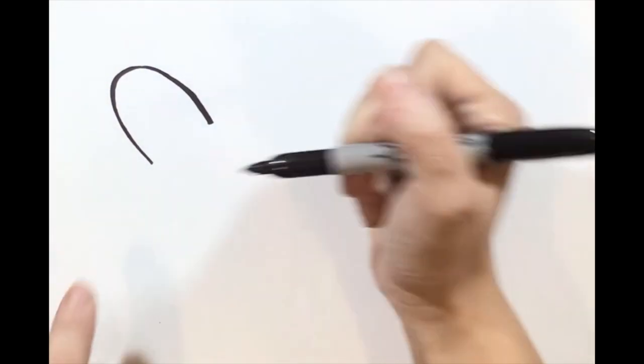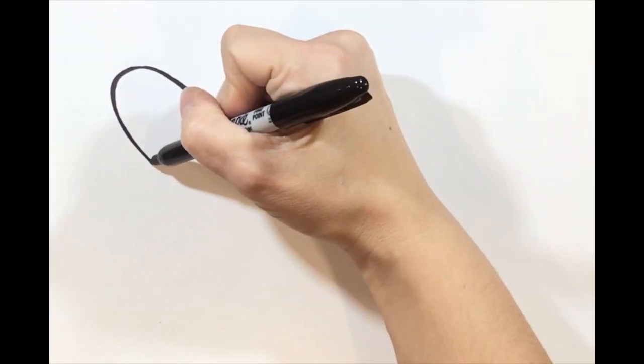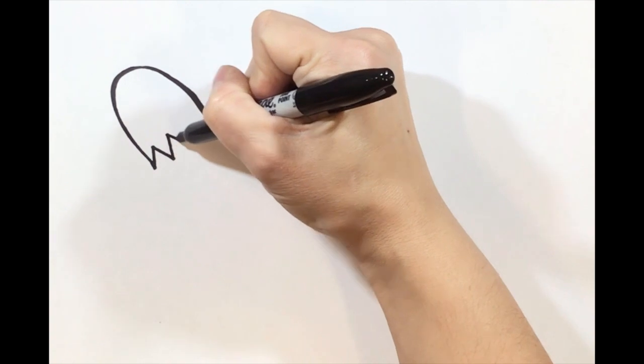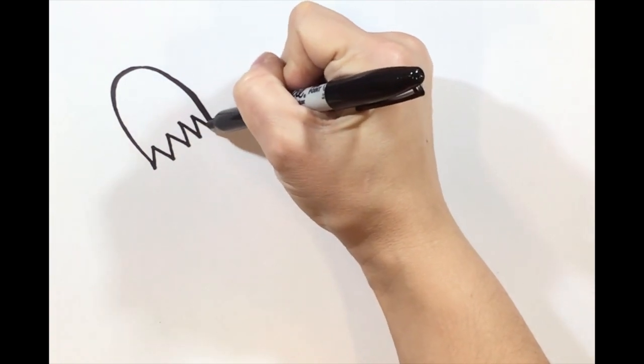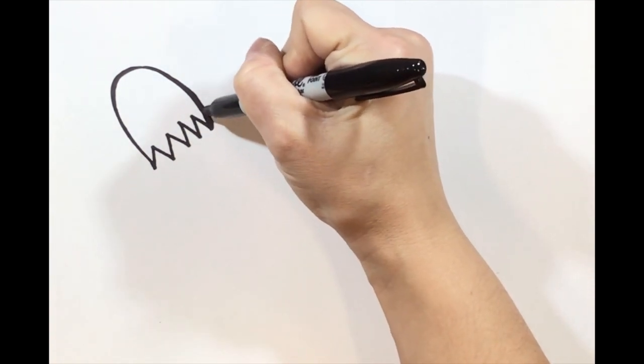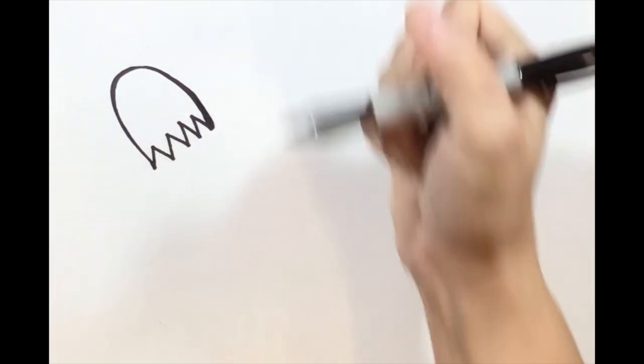Step number two, we're going to add some zigzag lines to the bottom. It's going to create the bottom of our rooster head, and it's going to act as if it's a little bit of the feathers at the bottom.